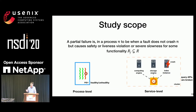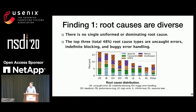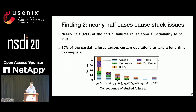Our definition for partial failure is a fault that does not crash the process, but causes safety or liveness violations or severe slowness for some but not all functionalities. We focus on partial failures at the process level instead of service level failure, which might be caused by crash. Our first finding is partial failures do not have a uniform or dominating root cause. The top three root causes, which occupy 48%, are uncaught errors like runtime exceptions not caught anywhere, indefinite blocking when some functions get stuck, and buggy error handling.